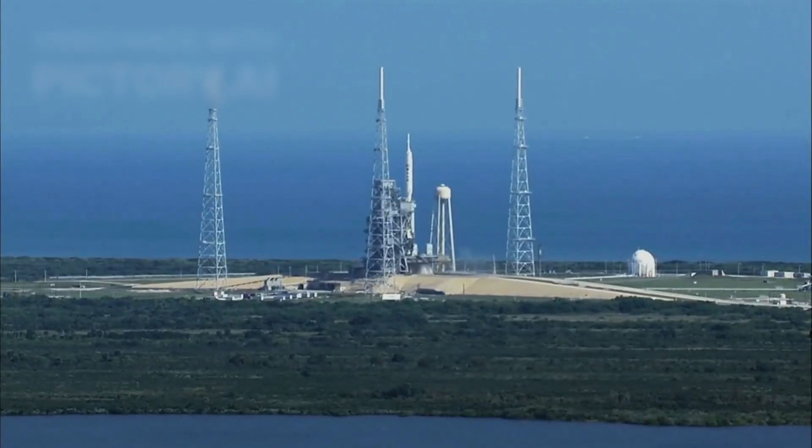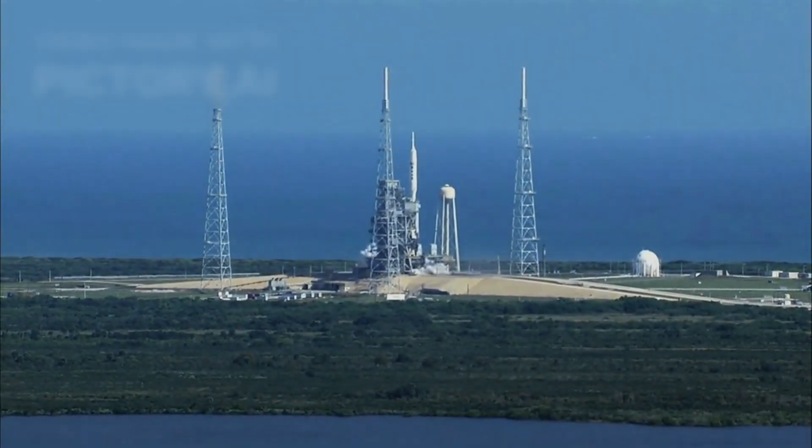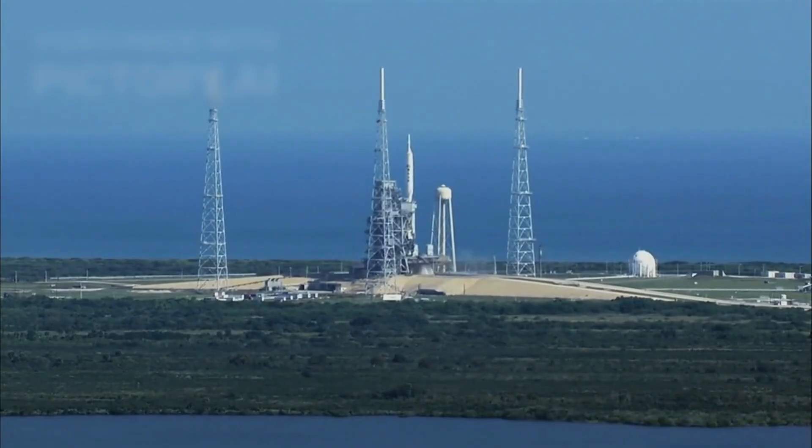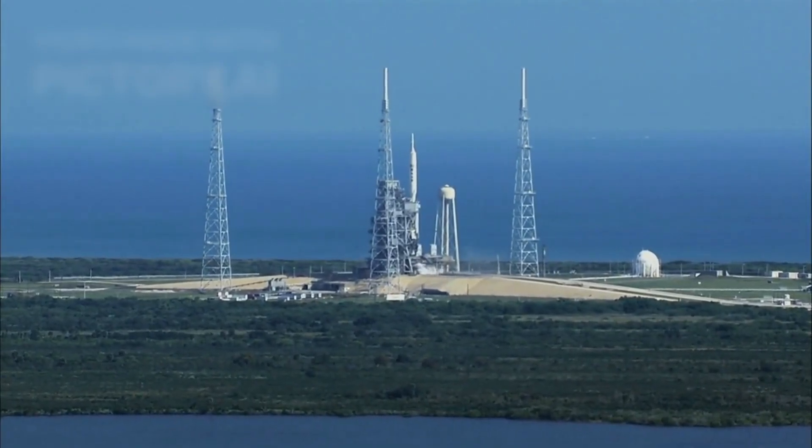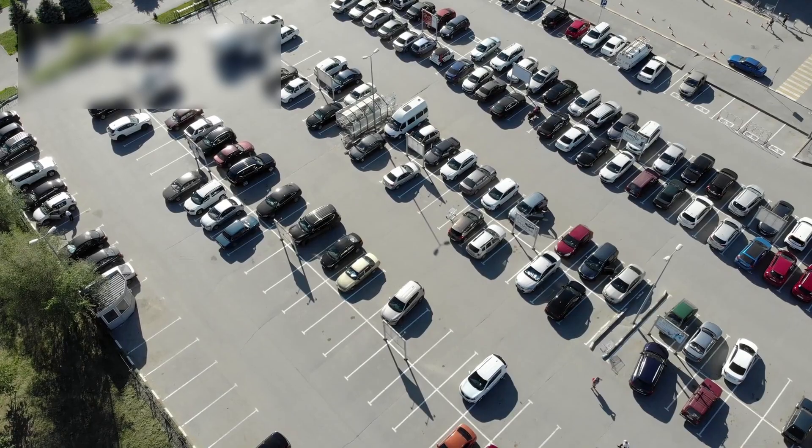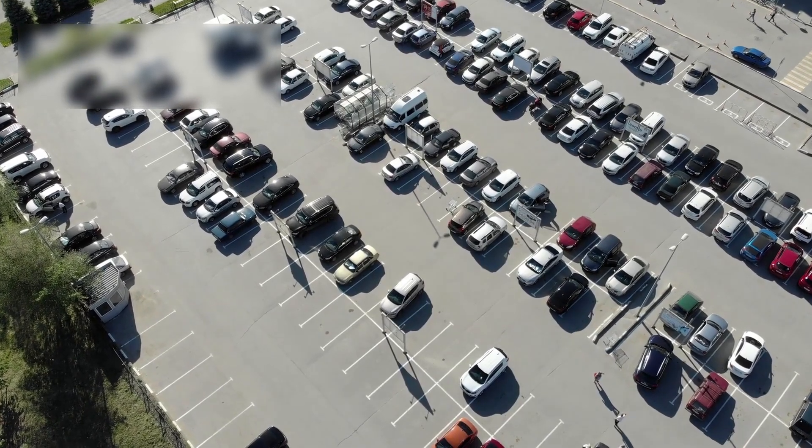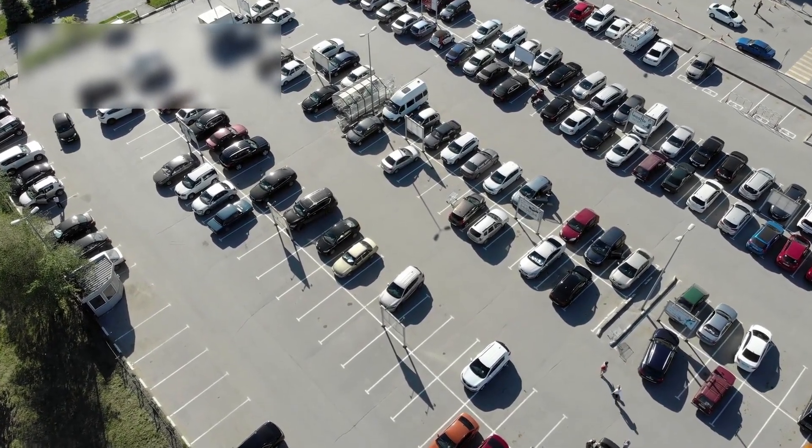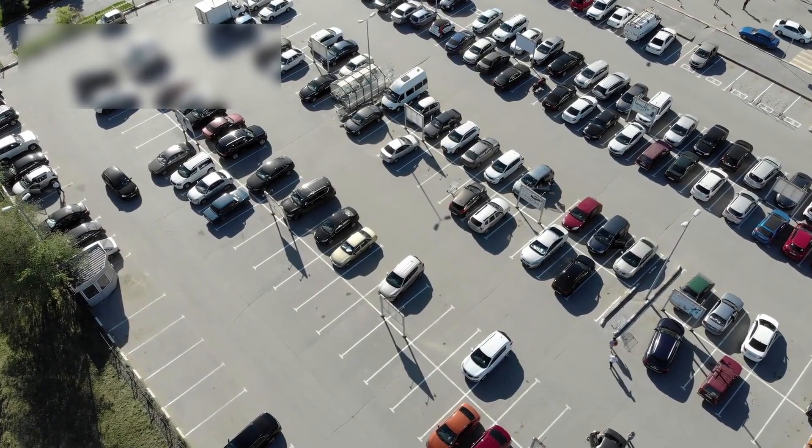On September 5, 1977, humanity launched a small, unassuming spacecraft into the vastness of space, Voyager 1. No bigger than a compact car, this robotic emissary was sent by NASA on a mission that was as ambitious as it was unprecedented.